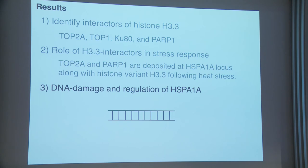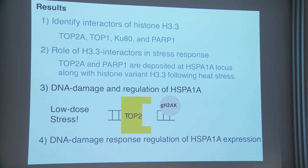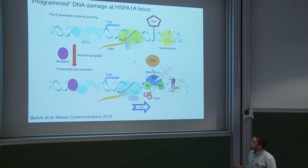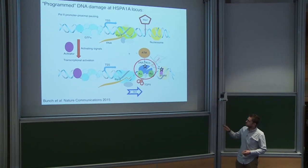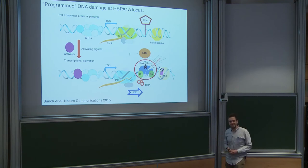I did additional experiments (detailed on my poster) to show that the DNA damage is responsible for transcriptional upregulation of HSPA1A — specifically that TOP2A makes a cut resulting in the DNA damage marker appearing at this locus following low-dose stress. I then looked at the DNA damage response itself, focusing on DNA-PK. The prior group claimed DNA-PK is important for upregulation of HSPA1A, but I felt the evidence was inadequate, so I investigated this directly.